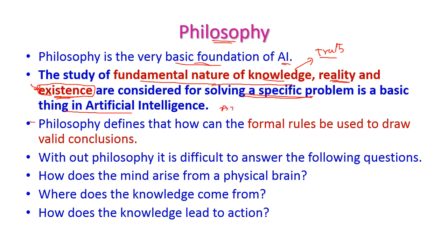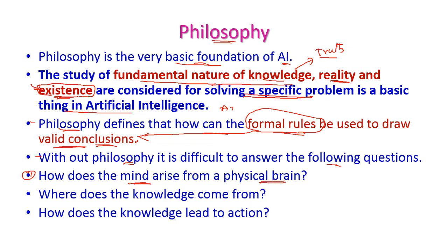Philosophy defines how formal rules can be used to draw valid conclusions. Without philosophy, it is difficult to answer key questions: How does the mind arise from the physical brain? Because we are going to create a new machine that should be an alternative to the human being, we need to understand and analyze the human brain and how the mind arises from it.